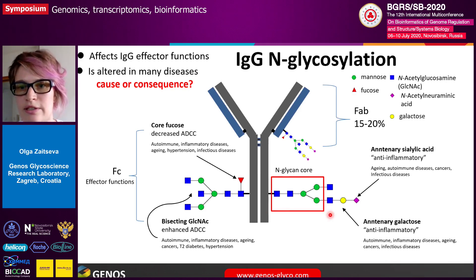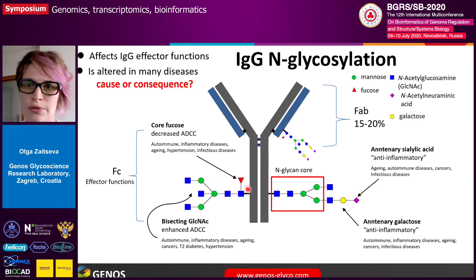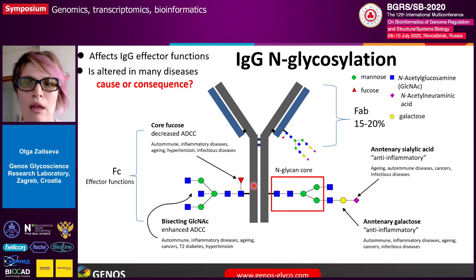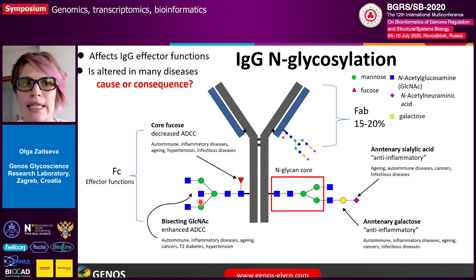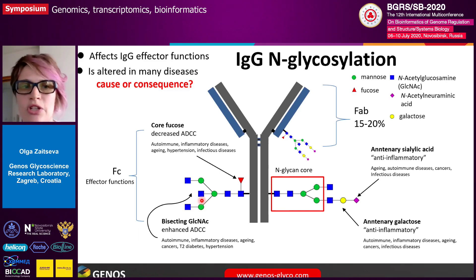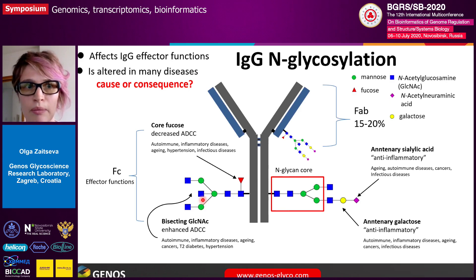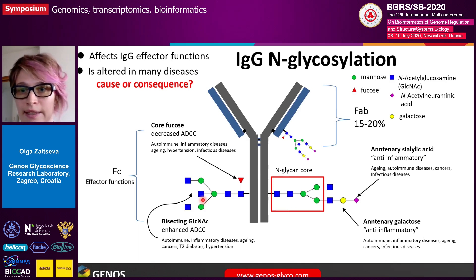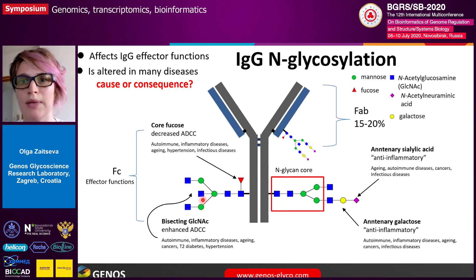Modifications such as antennae galactosylation and especially antennae sialylation are associated with a more anti-inflammatory and protective response. Addition of core fucose was shown to drastically reduce antibody-dependent cellular cytotoxicity, so it is also one of the anti-inflammatory modifications. However, bisection seems to be associated more with a pro-inflammatory profile. We know that IgG glycans are altered in many pathological states — in autoimmune diseases, inflammatory diseases, and with aging — but what we don't know is whether those changes are actually a consequence of pathological processes.